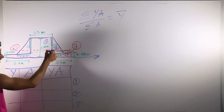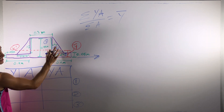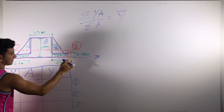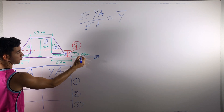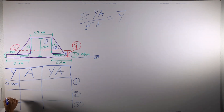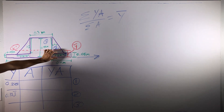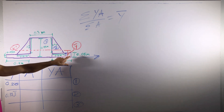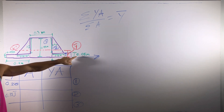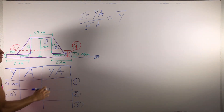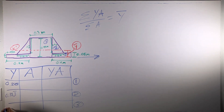One more time: for y of section two, we're going to do 0.4 divided by three, because the centroid of a triangle is up one third from the base, plus 0.05 to bring it all the way down. So that gives us 0.1833 repeating. Section three is much easier — it's just half the height because it's a rectangle, and our reference line is already on it. So it's 0.05 divided by two, which is 0.025.